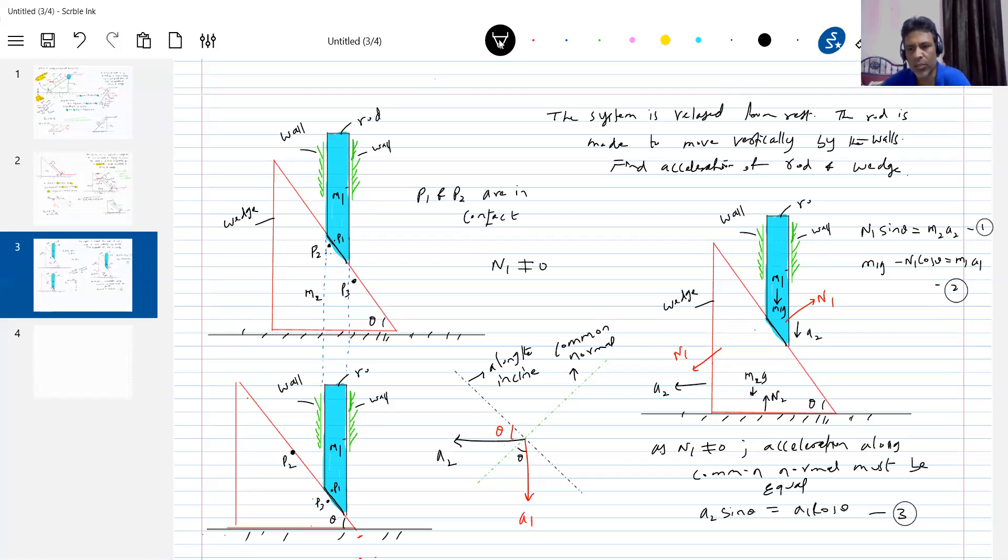This one. So solving this 1, 2, 3 will get the required answer. So what is this further? A2 should be equal to A1 cot theta.